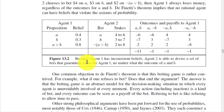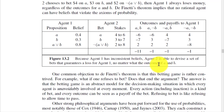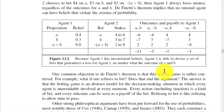Here is a diagrammatic representation with agent one and agent two, showing propositions, beliefs, bets, and stakes. This figure illustrates that because agent one has inconsistent beliefs, agent two is able to devise a set of bets that guarantees a loss for agent one no matter what the outcome of A and B.